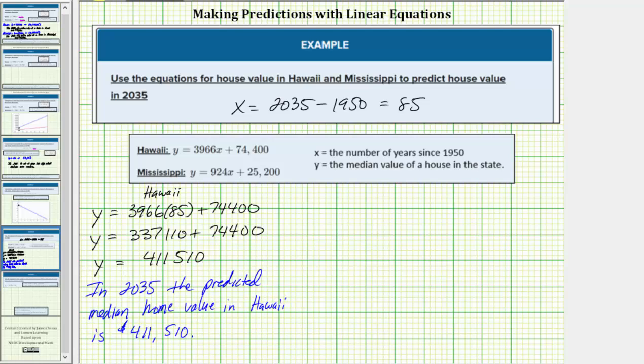Now let's consider Mississippi. The predicted median home value in 2035 is equal to y equals 924 times 85 plus 25,200.